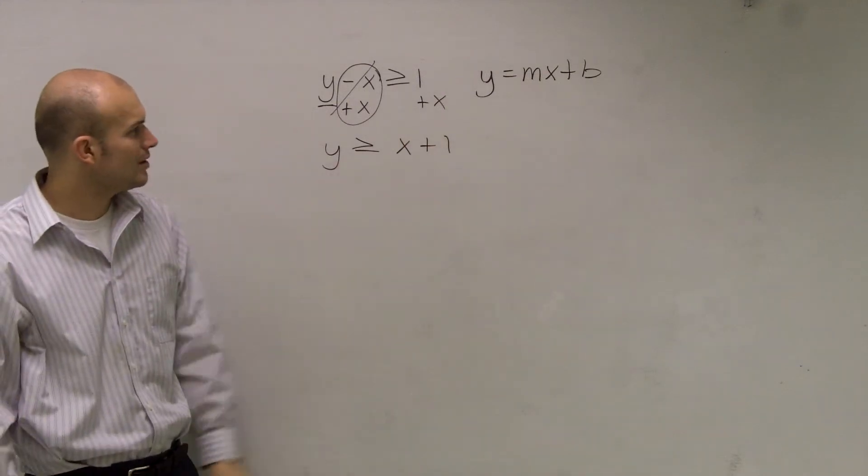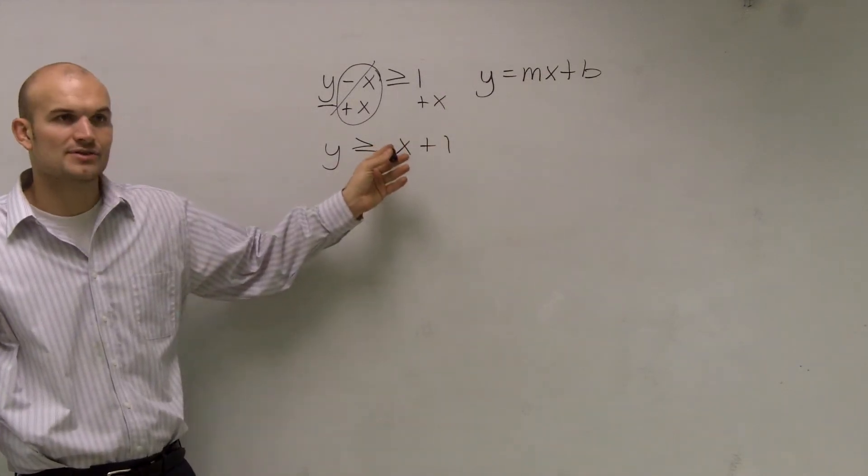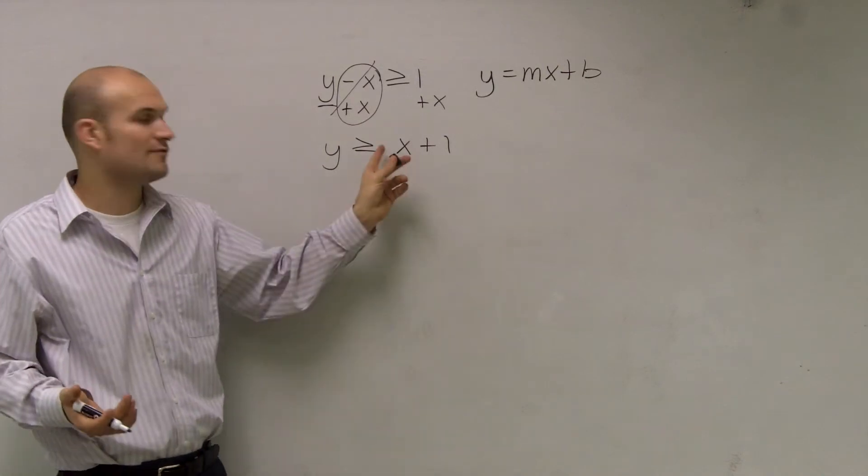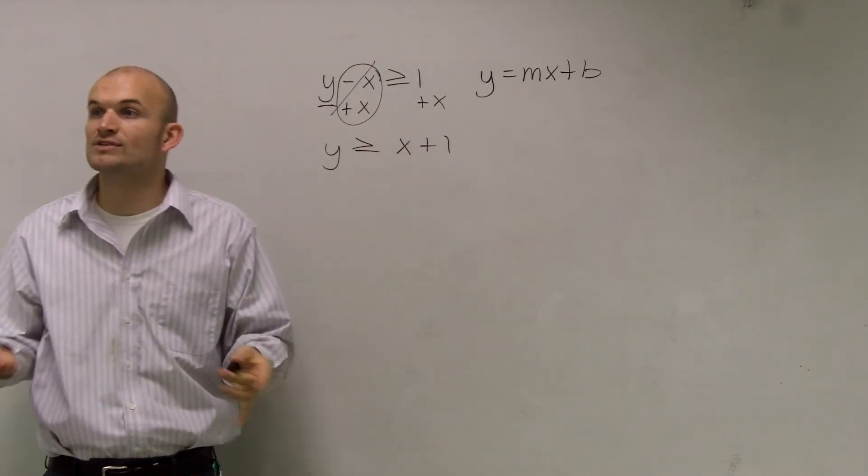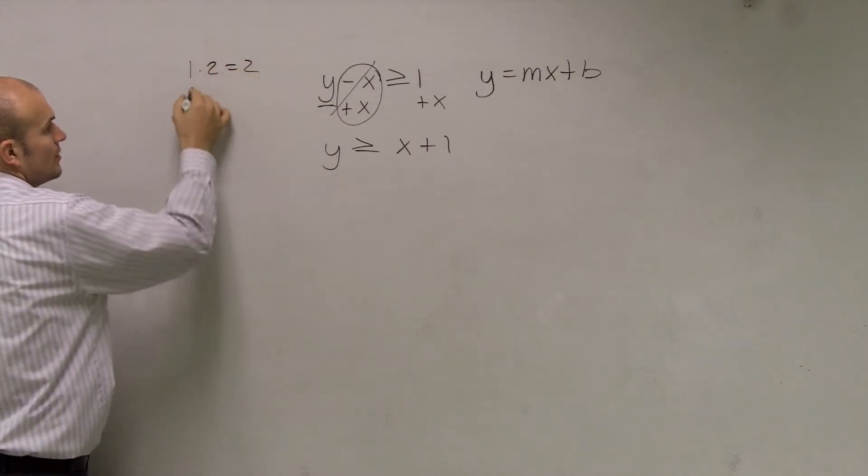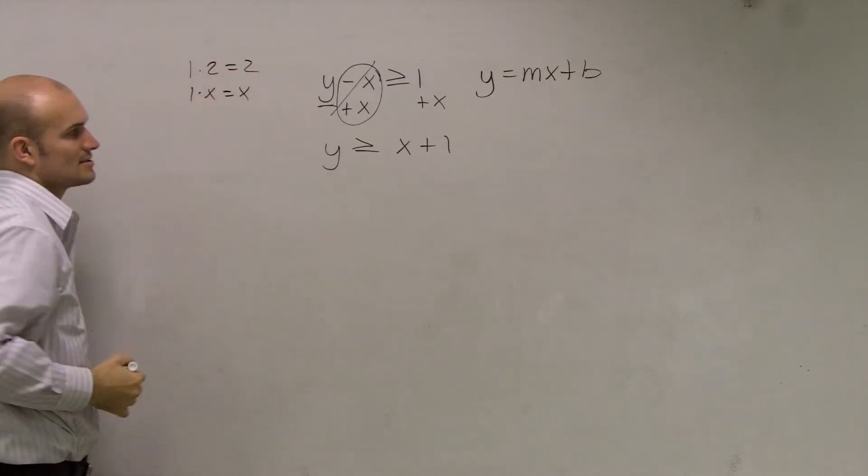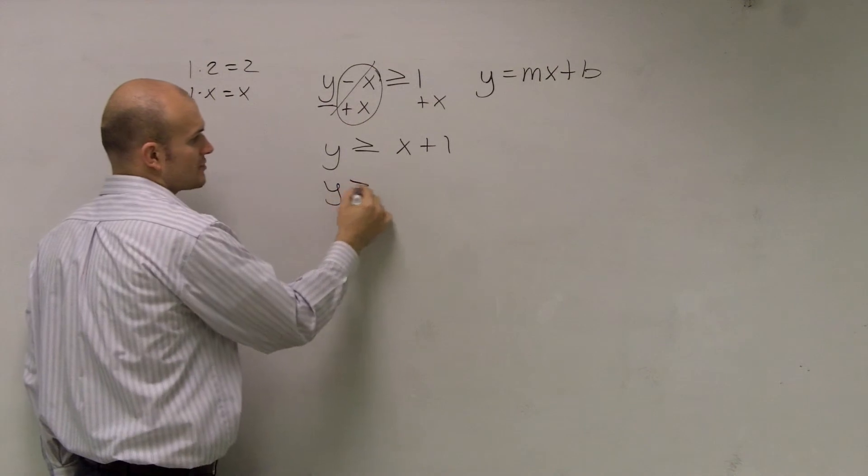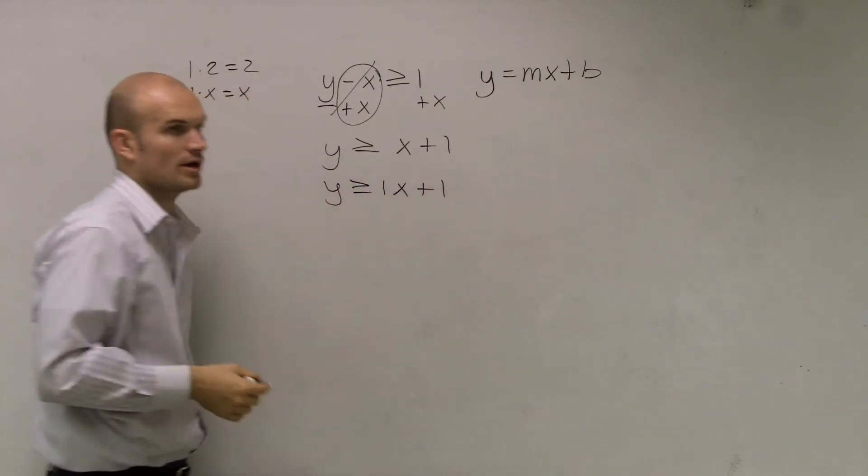Then we look at it and then we say, well, crap. Now we don't have an m, right? There's no number in front of x. Well, remember, guys, if we don't write a number in front of x, we can always write in the number 1. Because 1 times 2 equals 2. 1 times x equals x. So therefore, I can write y is greater than or equal to 1 times x plus 1.